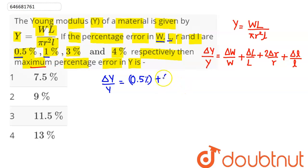Similarly, the percentage error in r is 3%, which becomes 6% when multiplied by 2, and the percentage error in l is 4%.